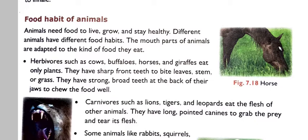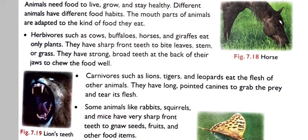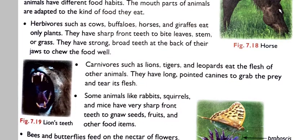The first point is herbivores. Herbivores such as cows, buffalo, horse and giraffe eat only plants. They have sharp front teeth to bite leaves, stems and grass. They have strong broad teeth at the back of their jaws to chew the food well.